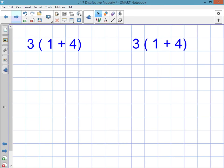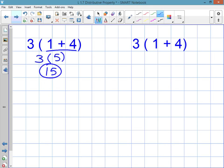I'll give you an expression that looks like this: 3 times parenthesis 1 plus 4. Most of you would just say, oh look, there's parentheses, I'm going to add 1 plus 4 together. Then I multiply 3 times 5 and get 15, and that's the correct way to do it.